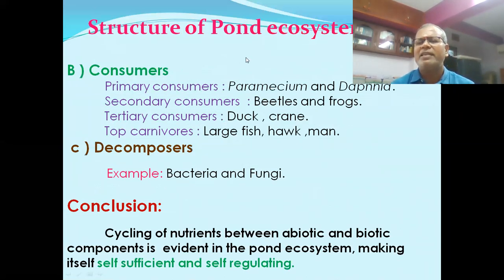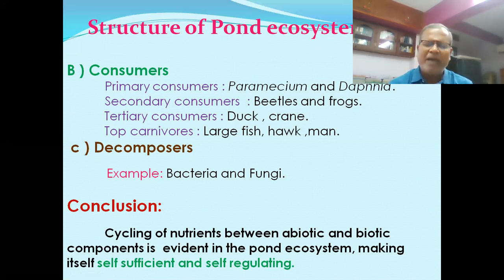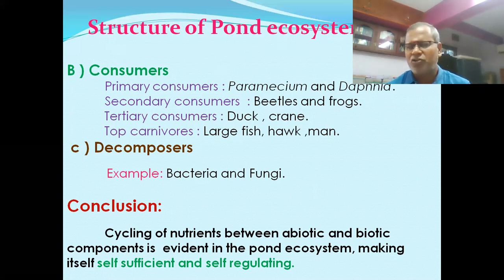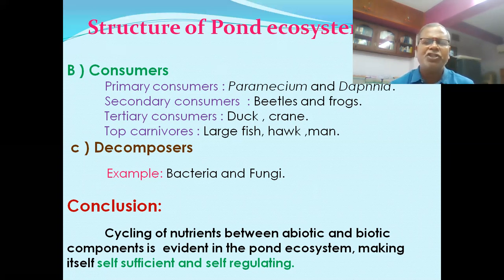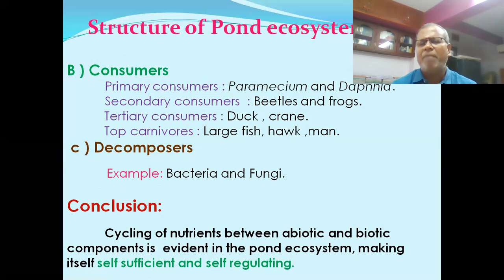Consumers are organisms which consume producers. They are classified as primary, secondary, tertiary, and top carnivores. Primary consumers are mostly herbivores — examples are Paramecium and Daphnia. Secondary consumers include beetles and frogs. Tertiary consumers include ducks and cranes. Top carnivores include large fish, hawks, and man.